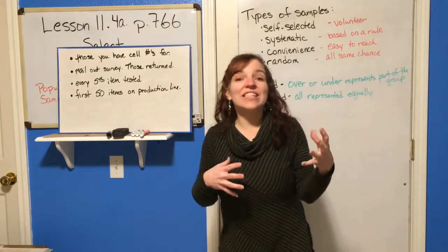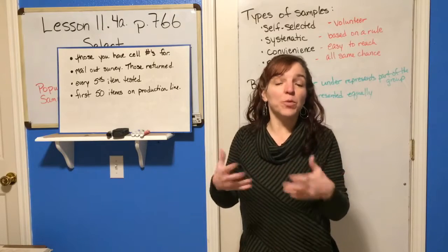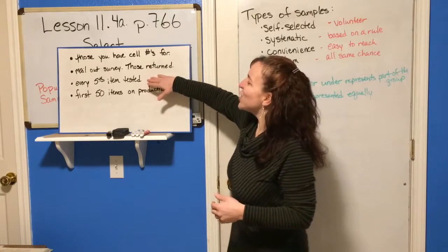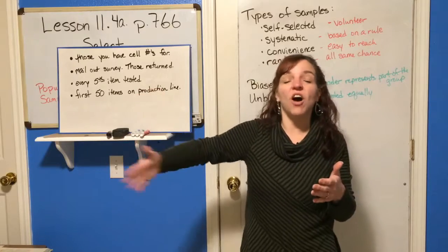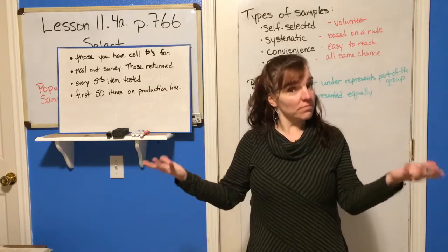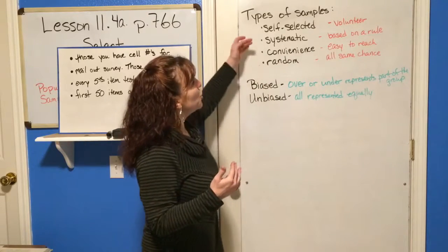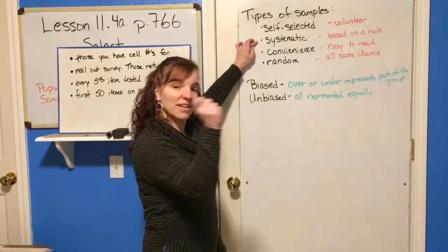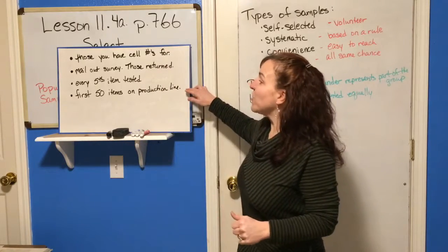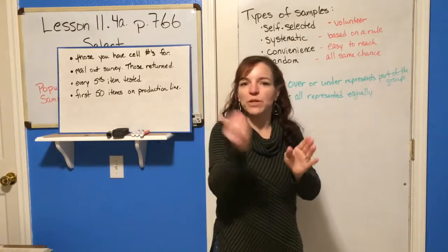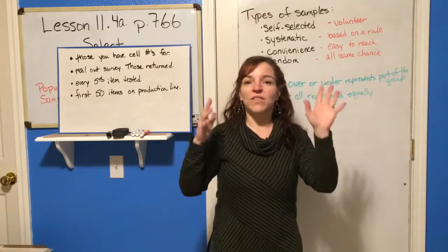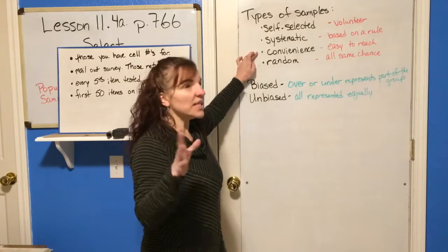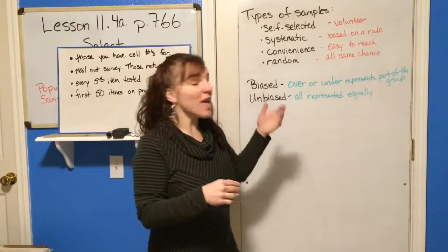What if a company knows that some of the items they produce are defective and so they test them? If they test every fifth item that comes off the line, what type of sample have they chosen? Every fifth item is using a rule, so that would be a systematic sample. But what if they just take the first 50 items that come off the line each day? They test those and use that as their sample. Well, that would tend to be convenience — those are the easiest ones. It's easy to test the first 50 and then be done. So that would be a convenience sample.